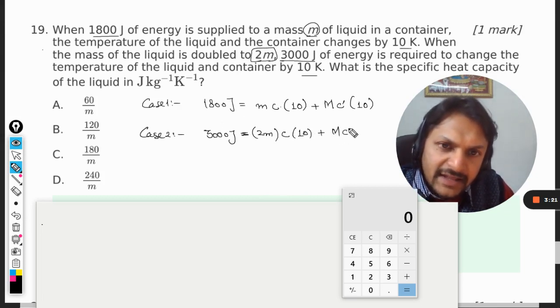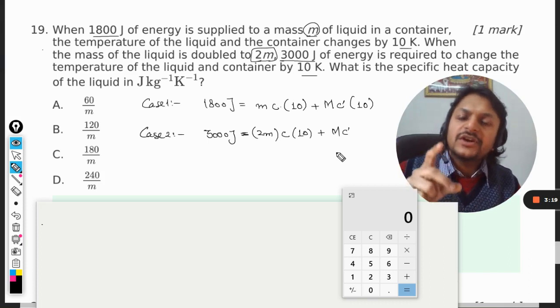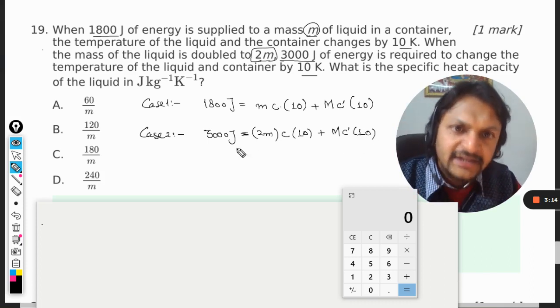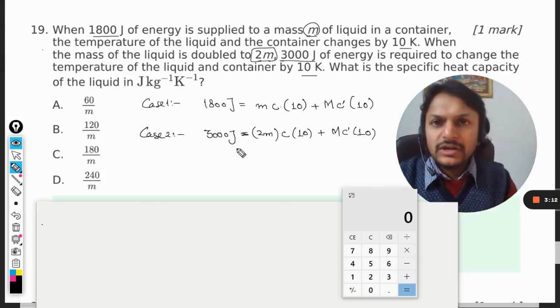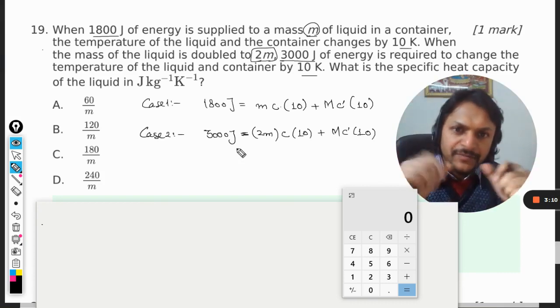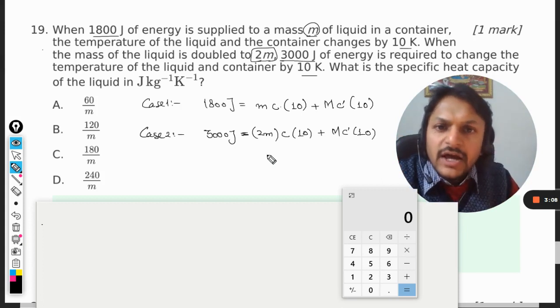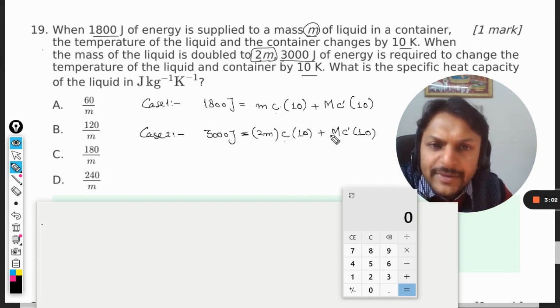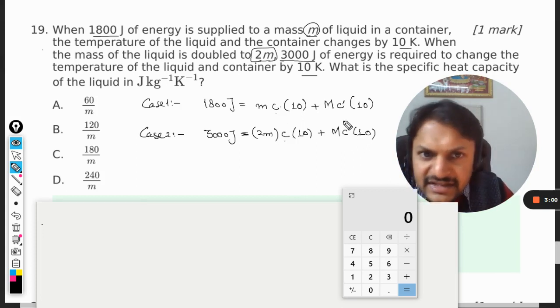And the container mass does not change. The specific heat capacity for the container also doesn't change, and the delta t is now even constant—even that is not changing. So these are the two equations now, and from this I need to find c here, the value of the specific heat capacity for the liquid.